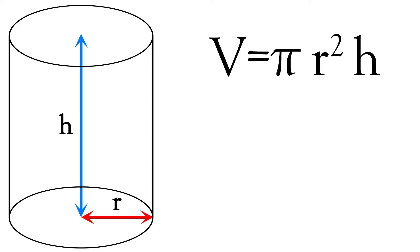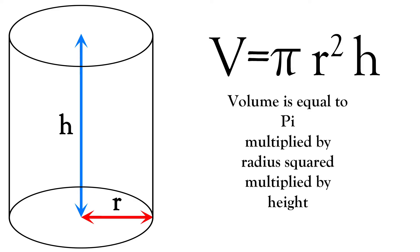Now some people may look at this and wonder, what in the world am I looking at? We're going to break it down. Volume is equal to pi multiplied by radius squared multiplied by height.